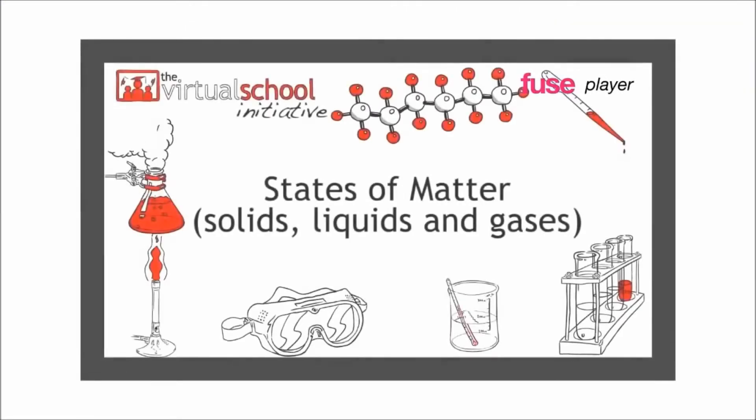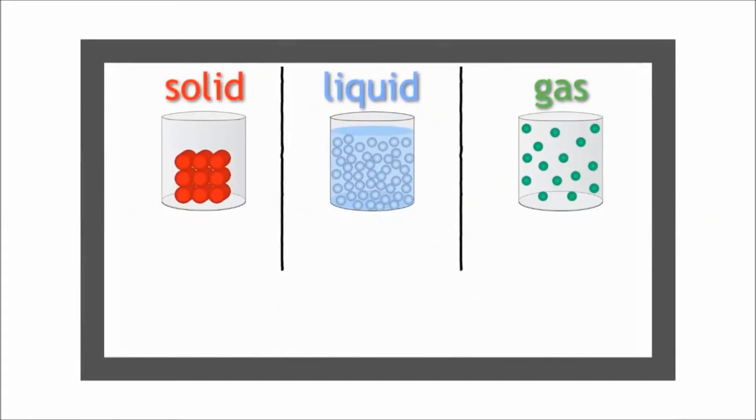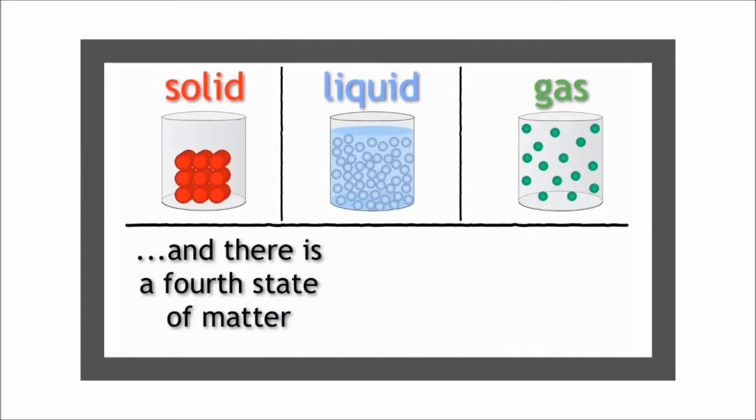You may have learned about the three states of matter: solid, liquid, and gas in a previous lesson. Did you know that there is a fourth state of matter, plasma?